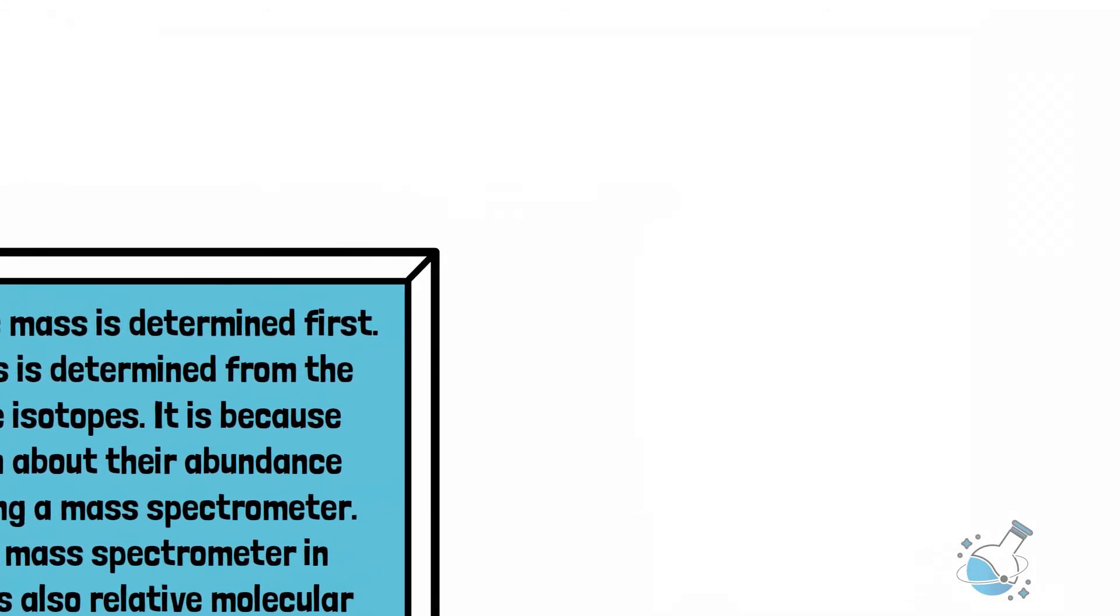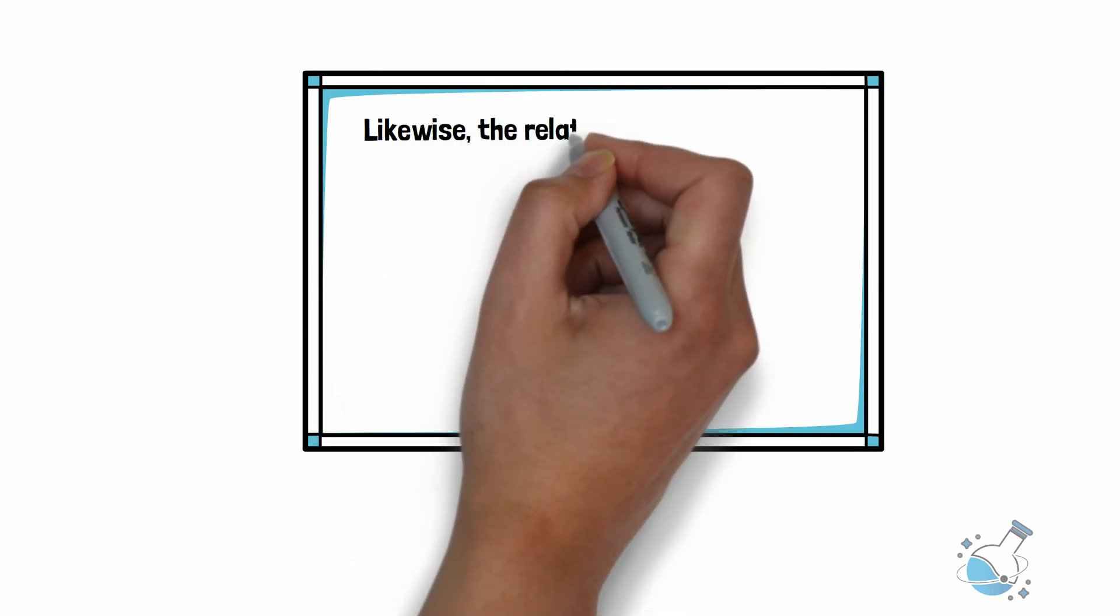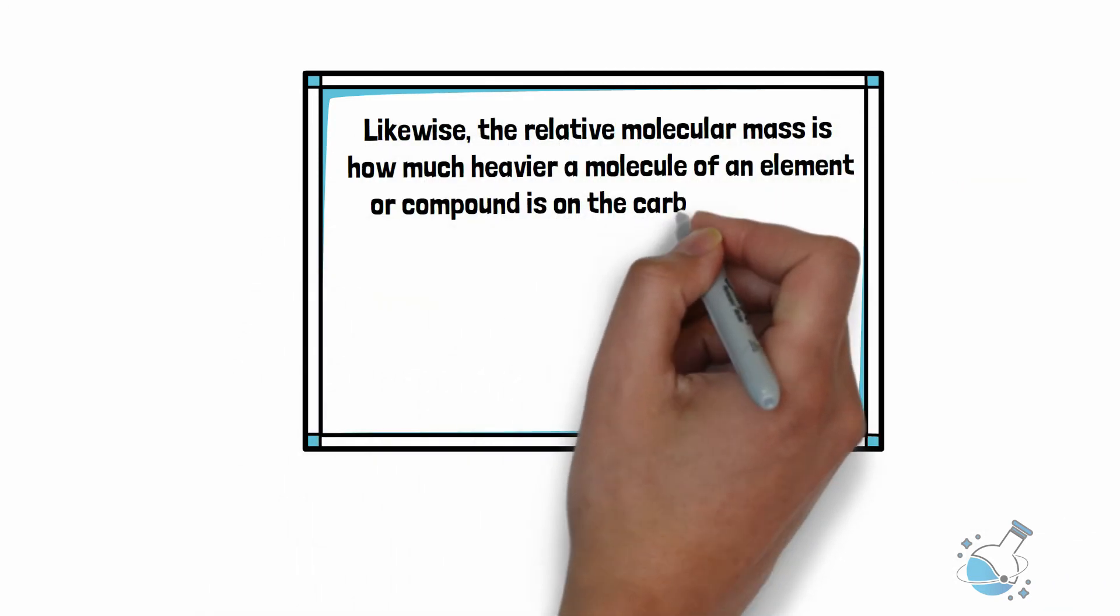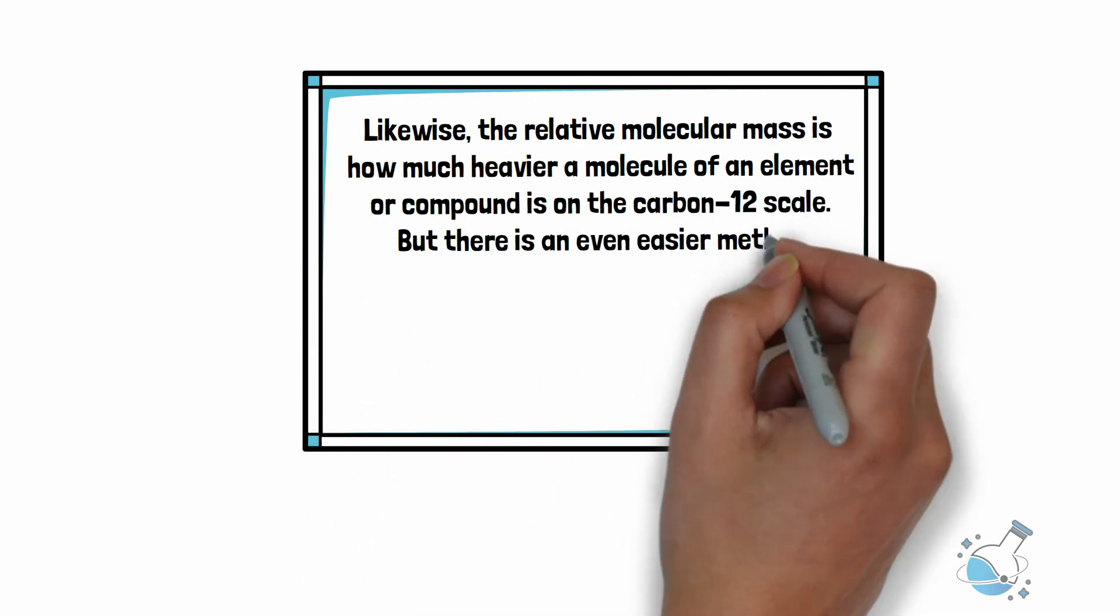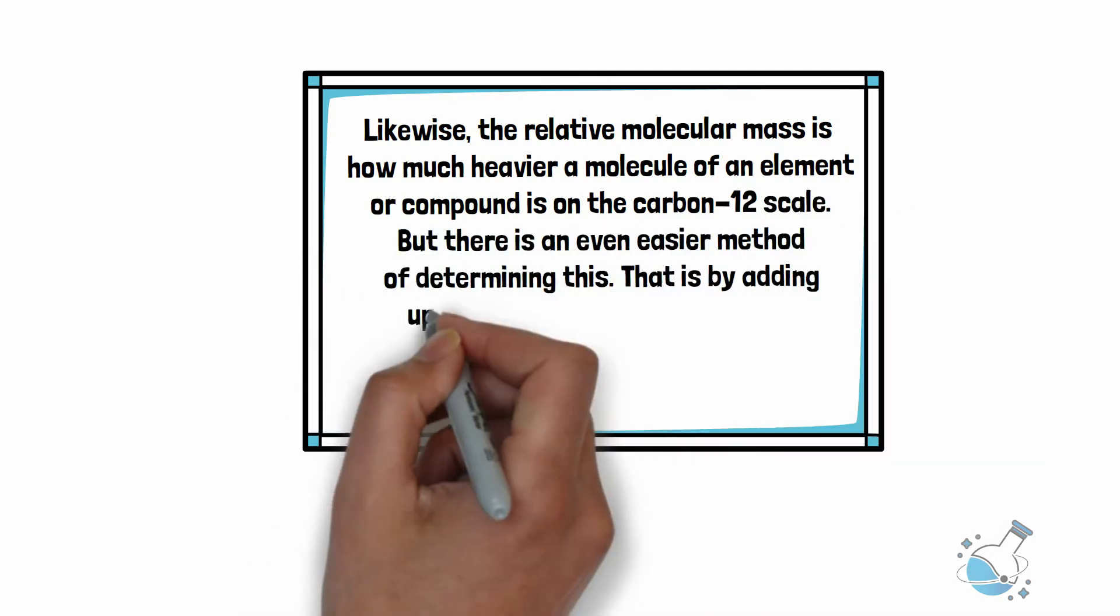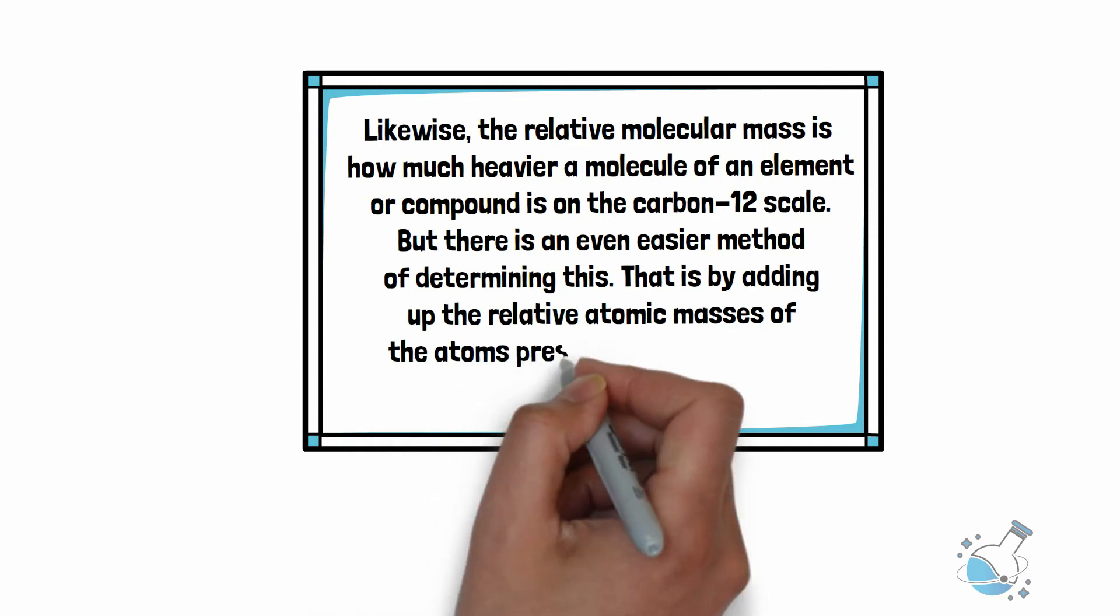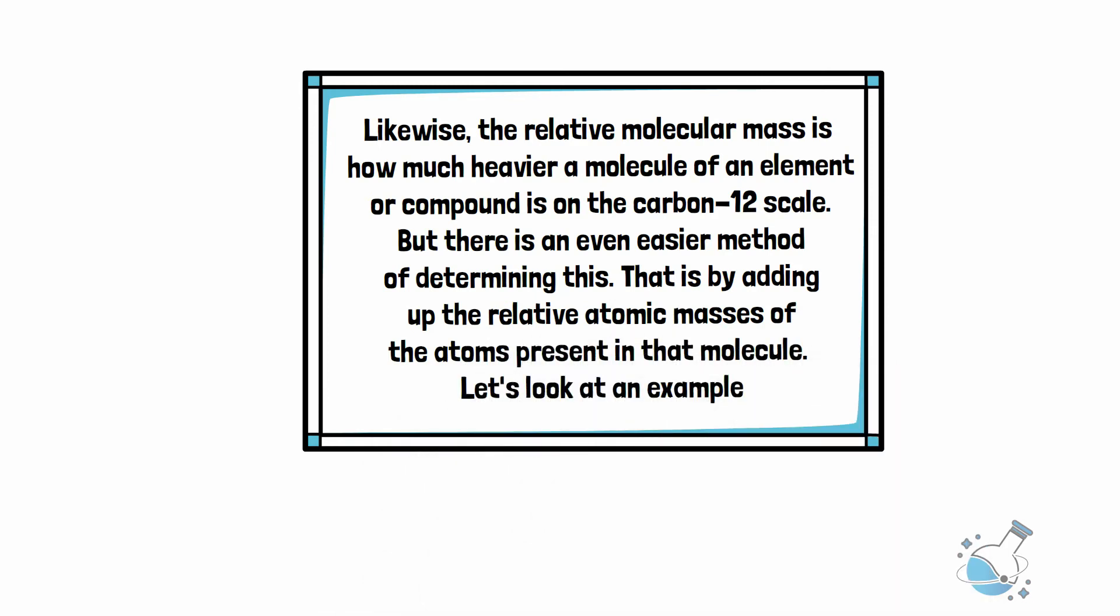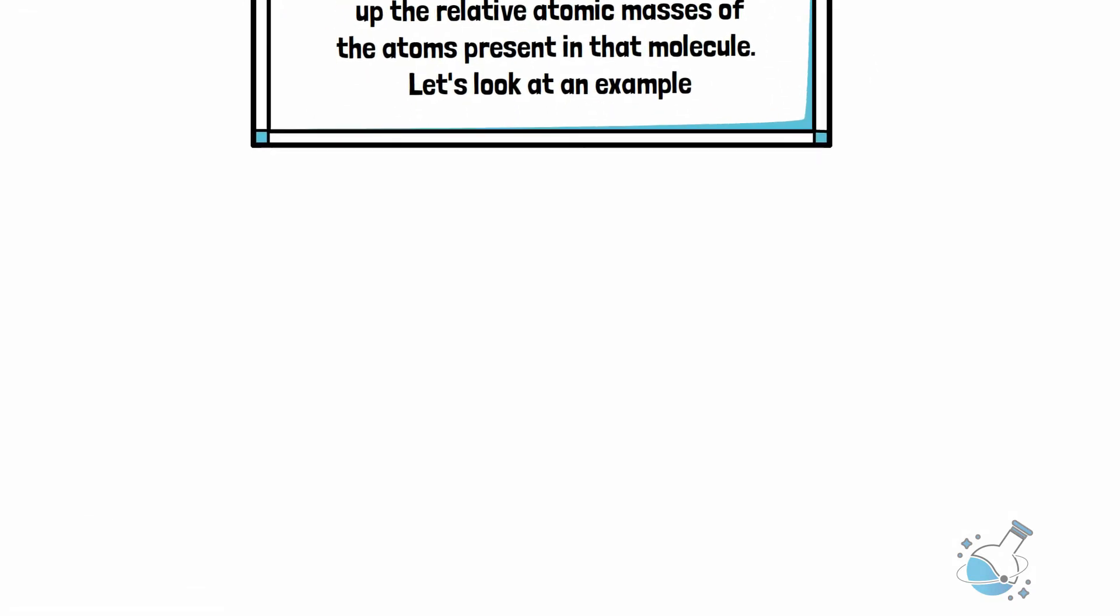But there is also relative molecular mass. So, let's check it out first. Likewise, the relative molecular mass is how much heavier a molecule of an element or compound is on the carbon-12 scale. But there is an even easier method of determining this. That is by adding up the relative atomic masses of the atoms present in that molecule.